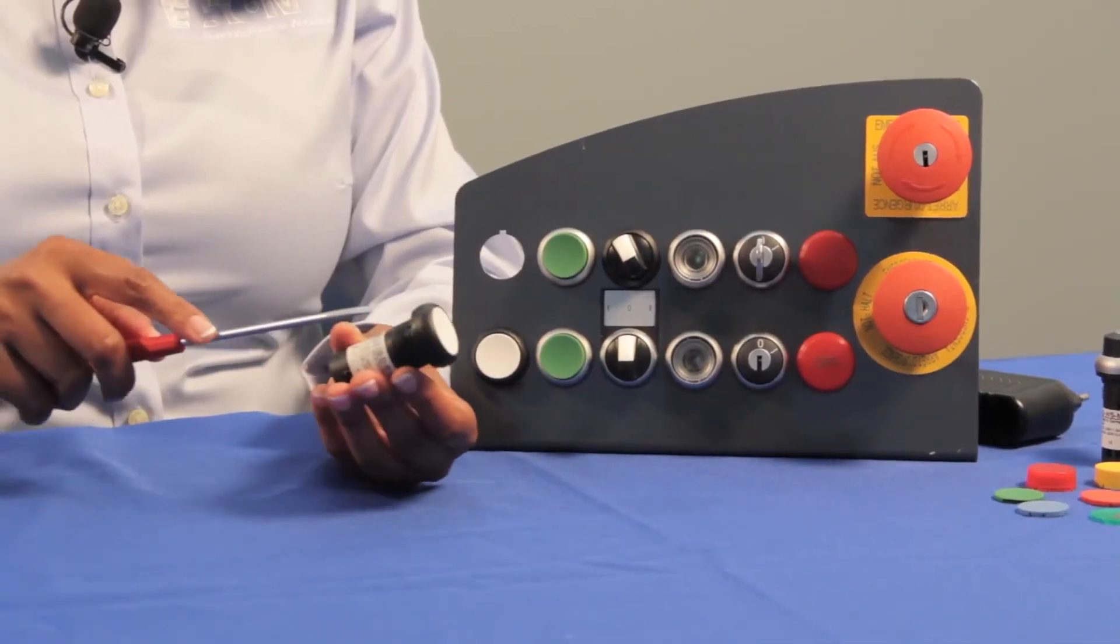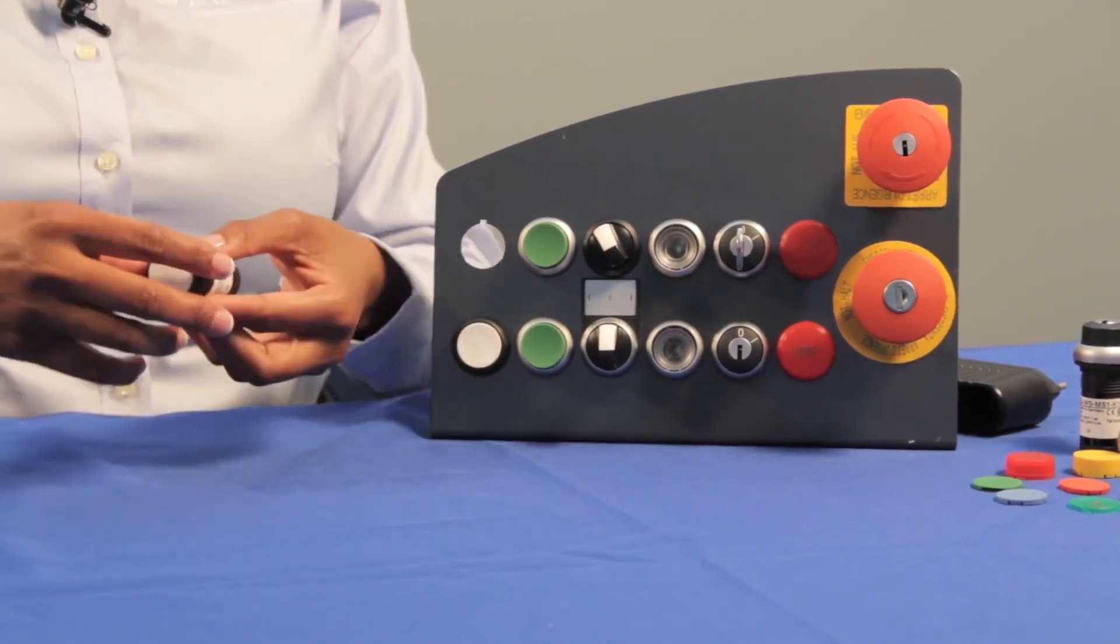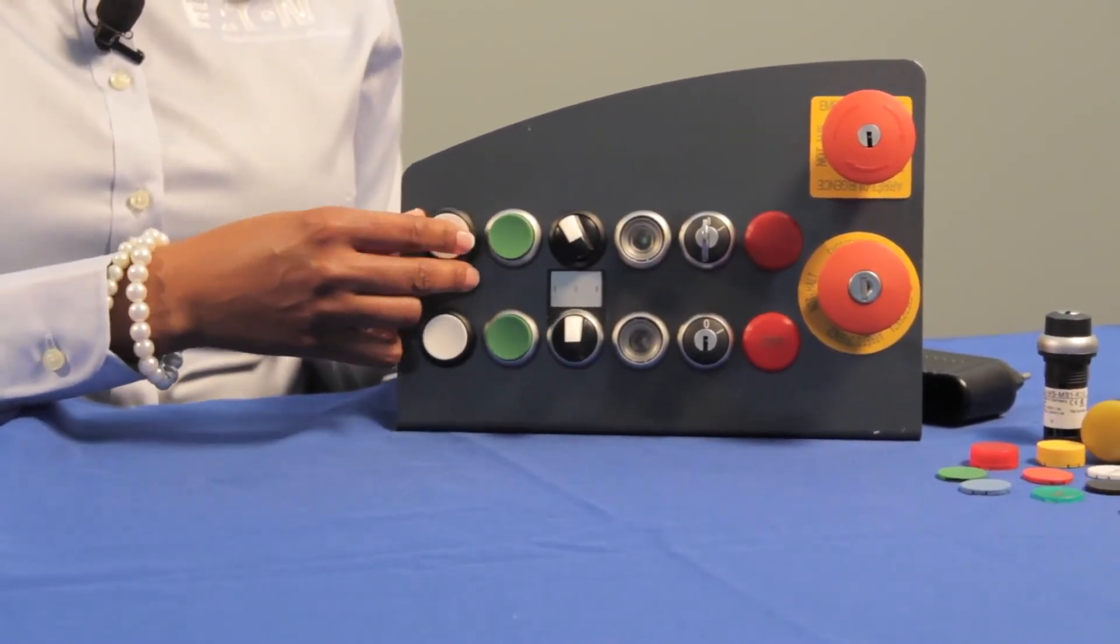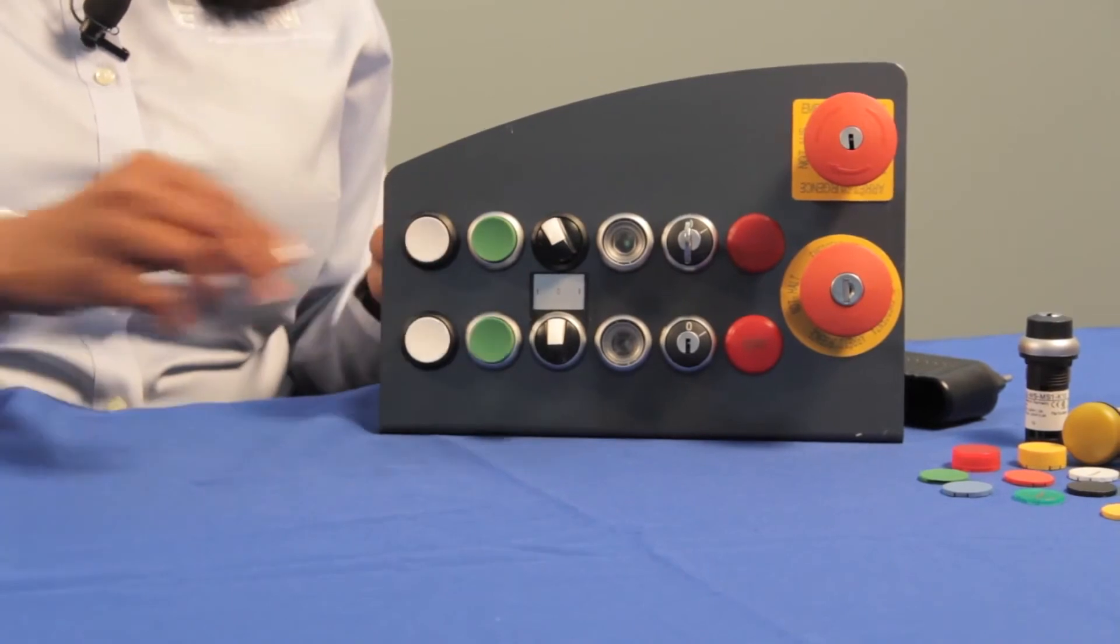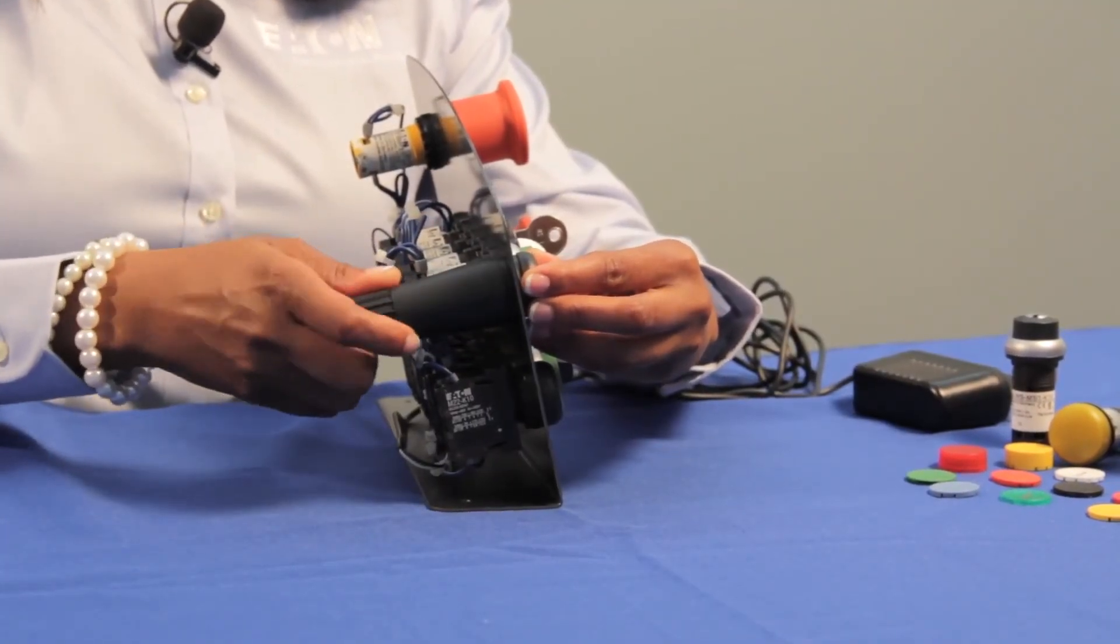To install our C22 push buttons you first identify the anti-rotation tab and then push the button from the front of the panel. Next, add the mounting ring and use a wrench to secure the operator in place.